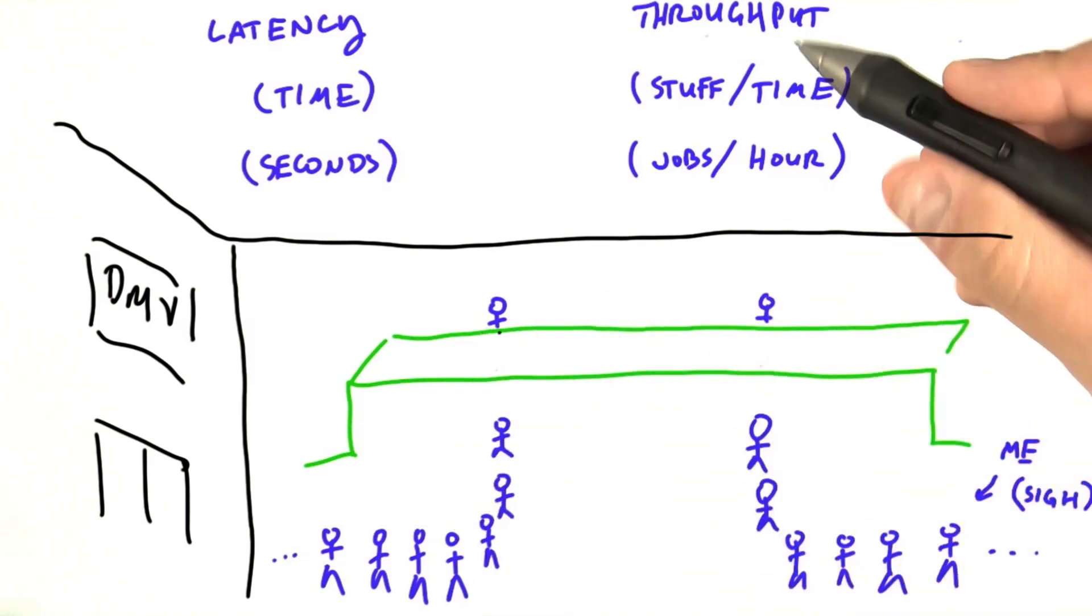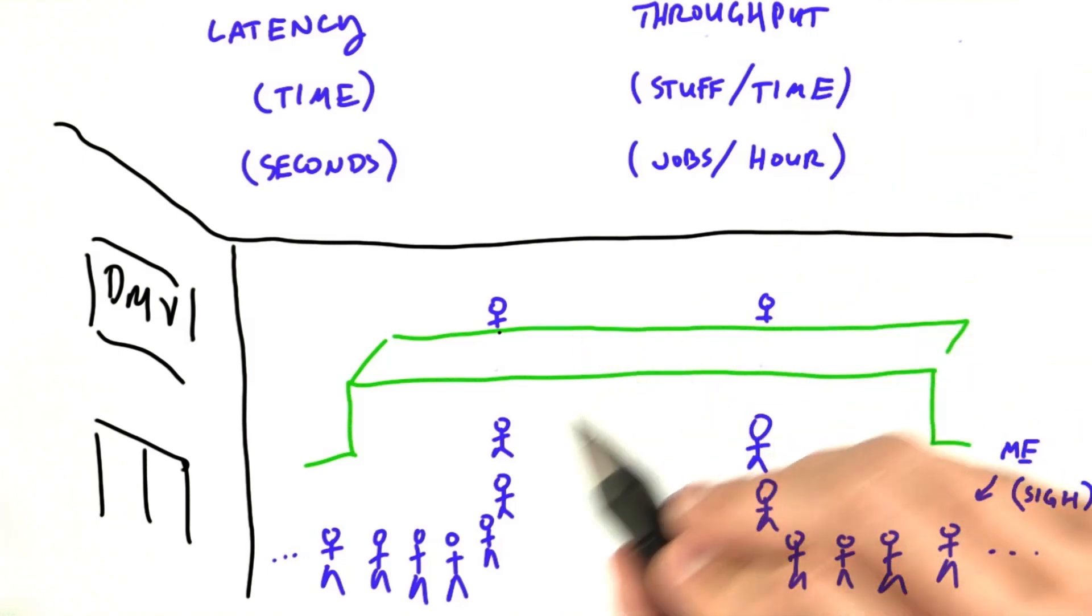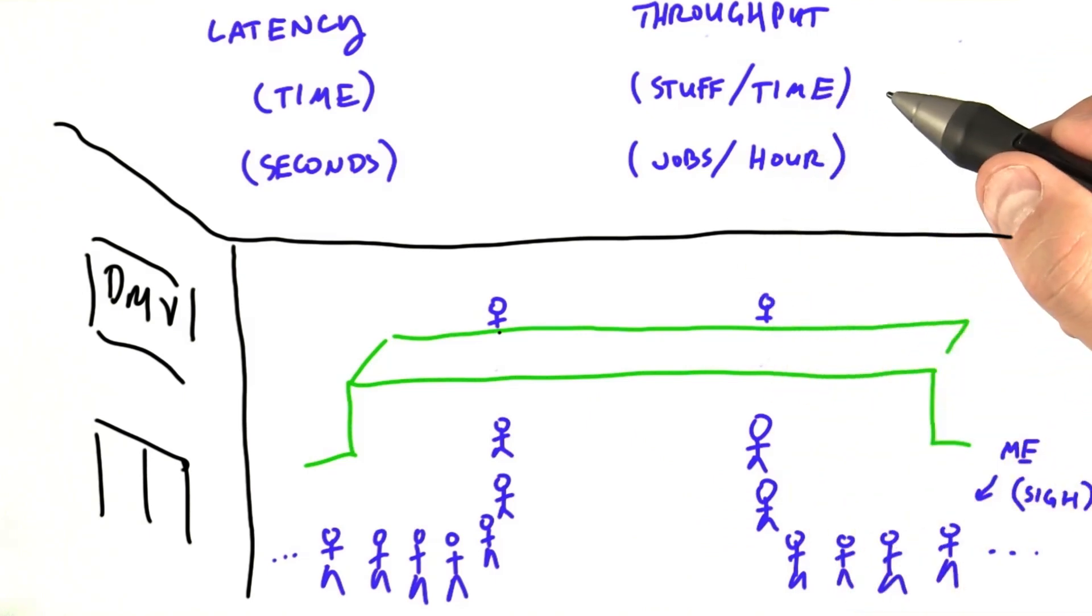Consequently, these two people sitting behind the desk right here that work for the DMV want long lines. Long lines mean their hardworking employees are always busy because there's never a time they don't have a customer waiting.